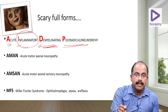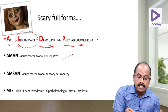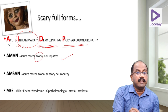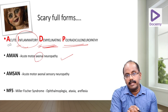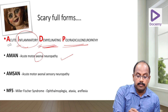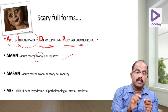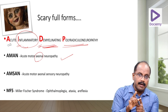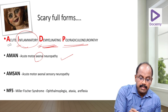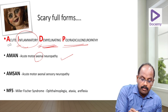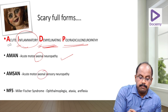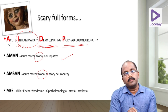The second type is AMAN — Acute Motor Axonal Neuropathy — where the axon is the problem rather than the myelin. The third type is AMSAN — Acute Motor and Sensory Axonal Neuropathy — affecting both motor and sensory axons. The fourth is Miller Fisher Syndrome, a variety of GBS.